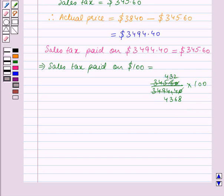Now dividing both numerator and denominator by 4, we get the numerator becomes 108 and the denominator becomes 1092. Again dividing both, the denominator becomes 273.